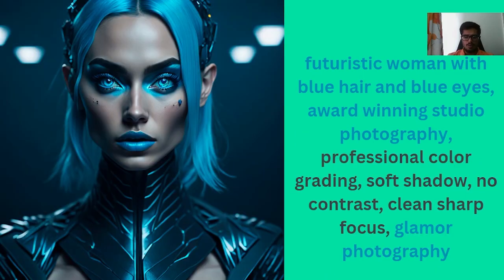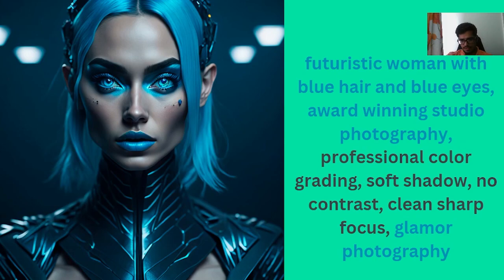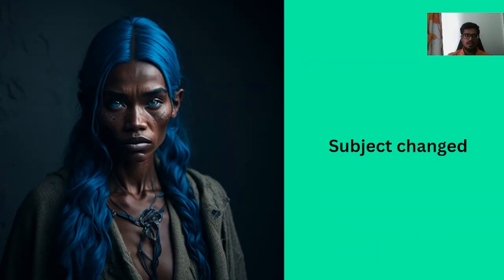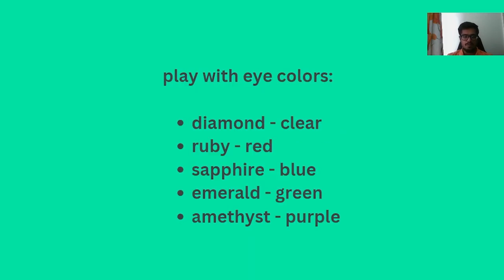Changing the photography style to glamour photography brings out the aesthetics of the subject — you can see blue lipstick and makeup appear to bring out the glamour side of the story. You can also change the subject itself — for example, from 'futuristic woman with blue hair and blue eyes' to 'a village woman' — and the generation changes accordingly. This particular photo was generated more in the style of a National Geographic photographer.